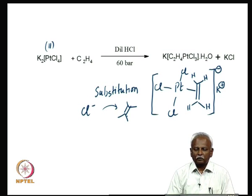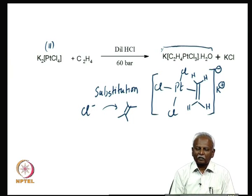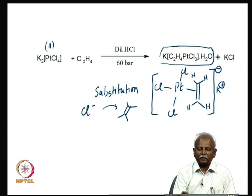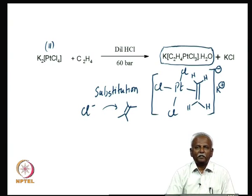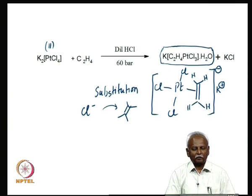A chloride ion is replaced by an olefin, and because the olefin is reasonably strongly bound to platinum(II) — a lower group element with sufficiently large orbitals — it forms a nice olefin complex. Notably, the complex is found in the presence of water: the whole reaction was done with dilute hydrochloric acid, and the crystal structure also contains a molecule of water. So the very first olefin complex synthesized — before the discovery of ferrocene — had a molecule of water in the lattice and was made by boiling in dilute hydrochloric acid with ethylene.